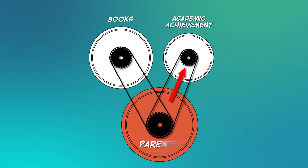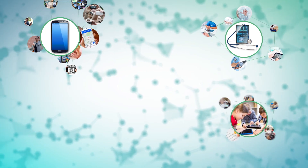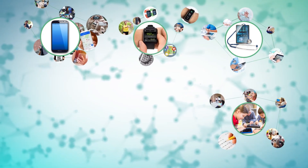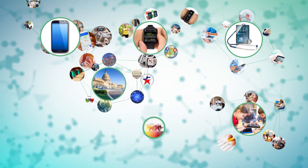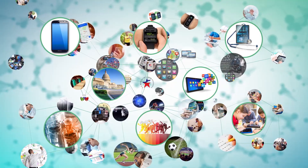We're omitting your parents' IQ. Now, omitted variable bias may sound fancy, but really it just means you left out an important factor in your analysis. Understanding this term and, more importantly, understanding how to make sense of data is a crucial skill in the modern world.